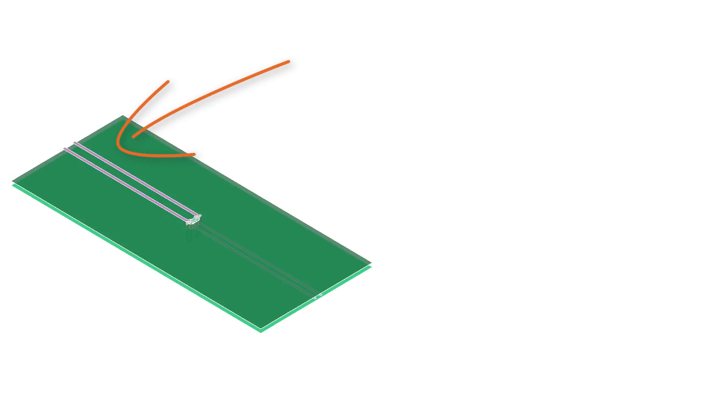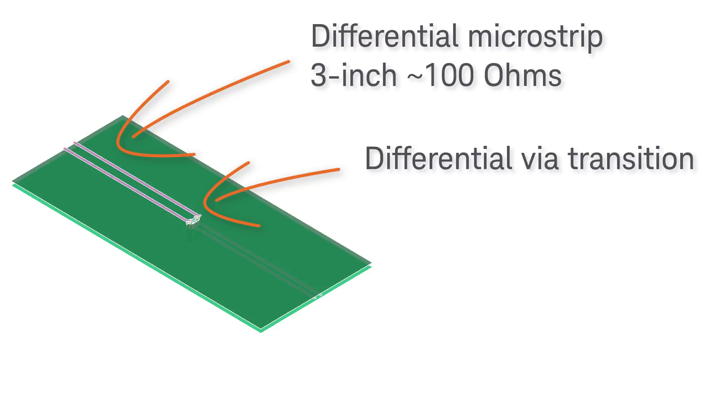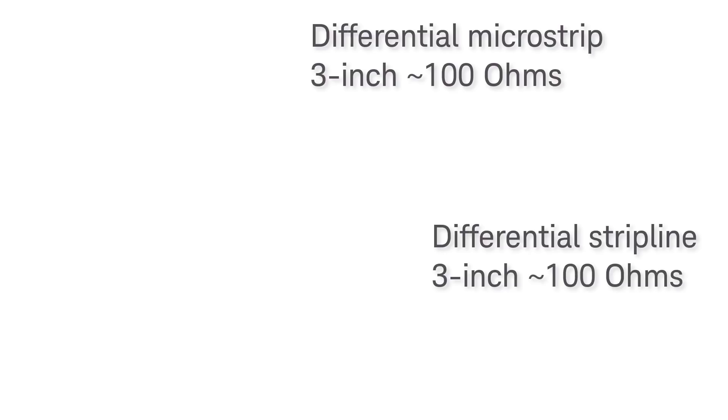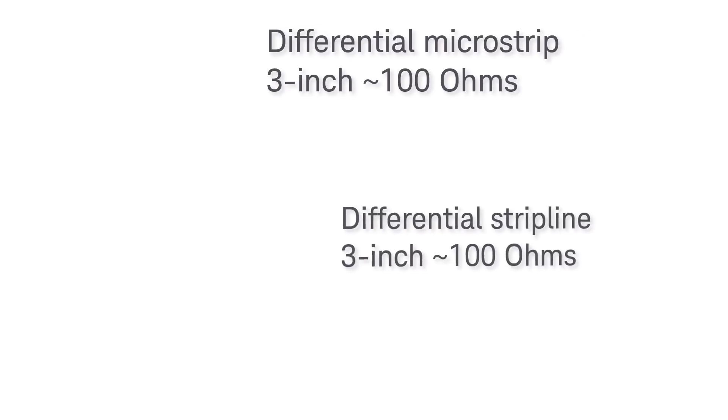The first section is a 3 inch 100 ohm differential microstrip line. The second section is differential via transition. The third section is a 3 inch 100 ohm differential strip line. Since the first and third part are both transmission lines, we will group them together.